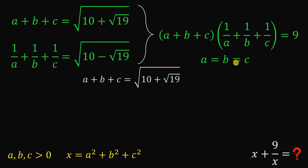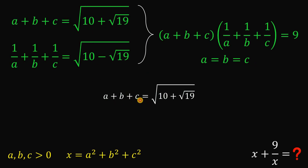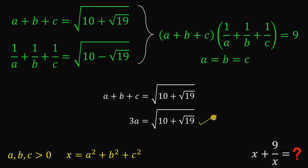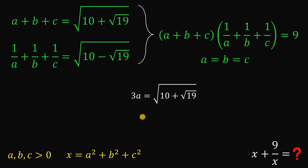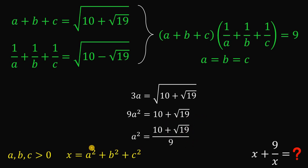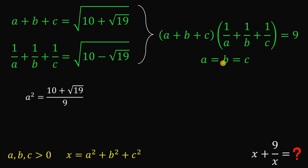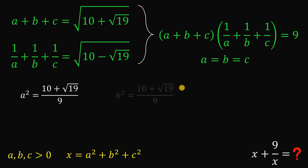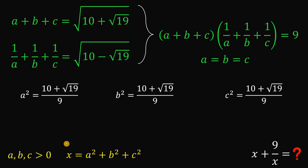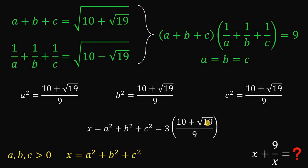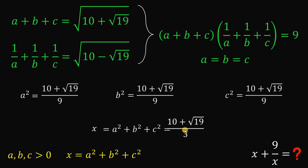Now let's continue. We know that A equals B equals C, so using the first equation, we can replace B and C with A. The left-hand side is just 3 times A. Squaring both sides, we have 9A squared equals 10 plus square root of 19. It follows that A squared equals (10 plus square root of 19) over 9. Since A equals B equals C, we also have B squared and C squared equal to (10 plus square root of 19) over 9. So X, which is the sum of A squared, B squared, and C squared, equals 3 times (10 plus square root of 19) over 9, which simplifies to (10 plus square root of 19) over 3. This is the value of X.